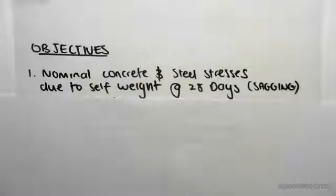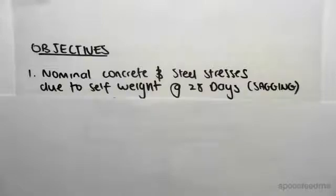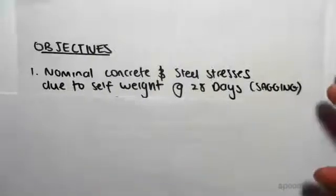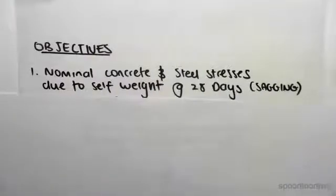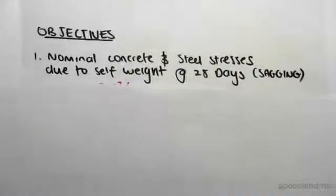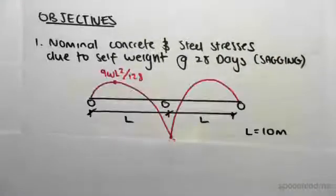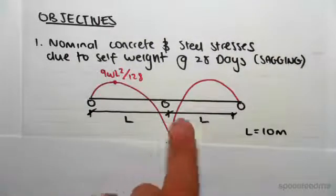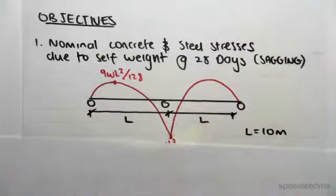Hey guys, the objective of this video is to find the nominal concrete and steel stresses due to the self-weight at 28 days, and we're looking at the sagging case. We're going to be looking at the cross-section we've been looking at in the previous videos. We're going to assume it's continuous — something like a bridge — so we've got a continuous span.